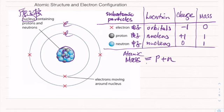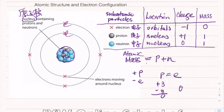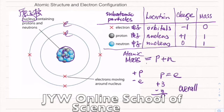Because protons are positively charged and electrons are negatively charged, those two numbers must equal each other for the atom to have an overall neutral charge. For instance, if you have three protons, you must also have three electrons — they cancel each other out.